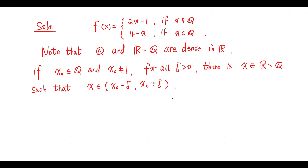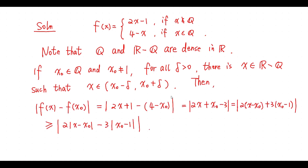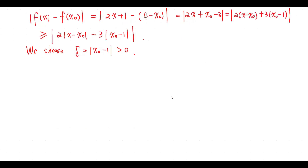If x0 is a rational number and x0 is not equal to 1, then for any positive number delta, there is an irrational number x such that x is in this interval. We have this inequality. We choose delta equals this number, which is greater than 0.